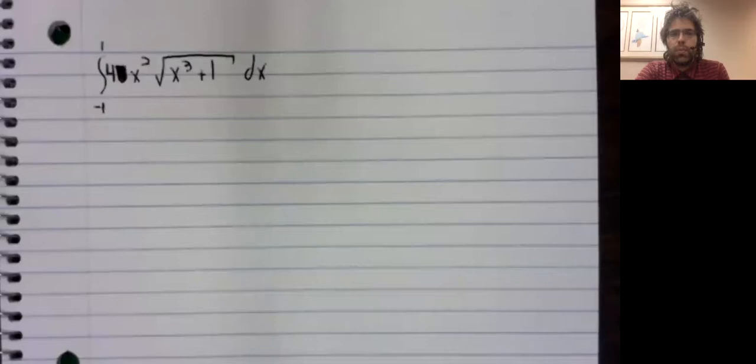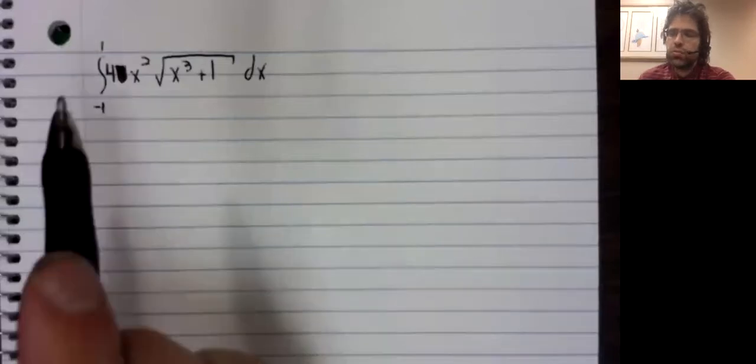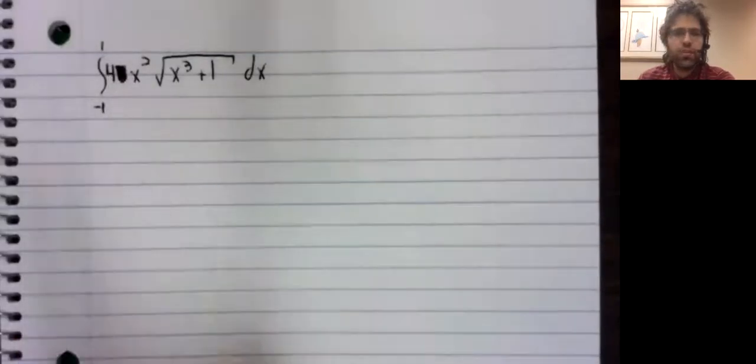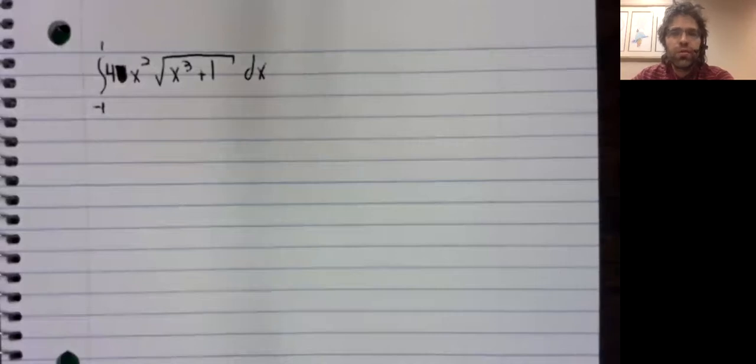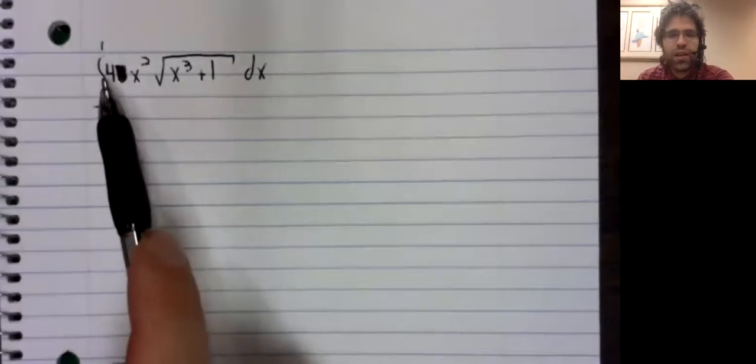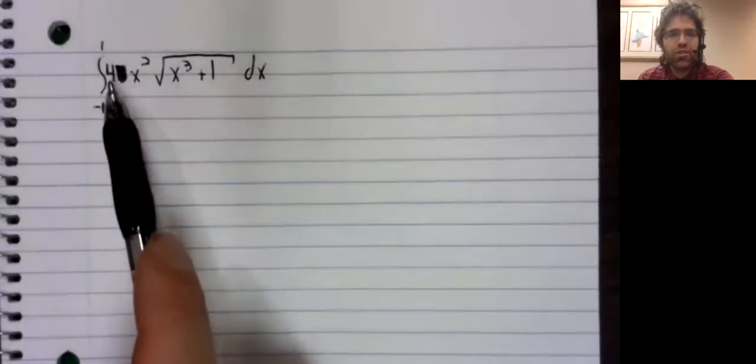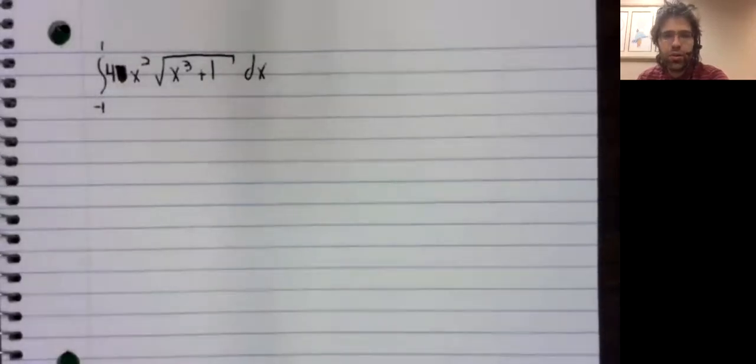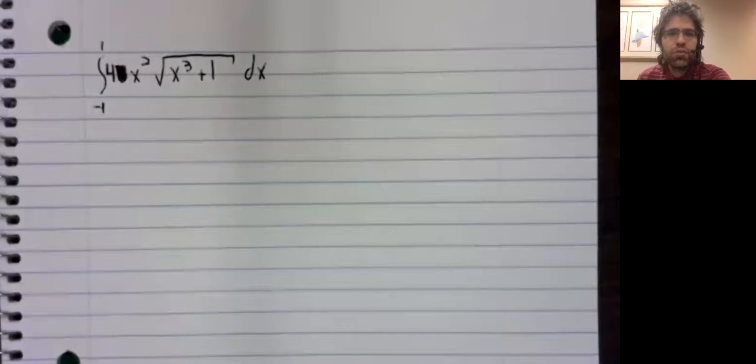Here's the problem we'll do twice. I edited it slightly from the notes. In the notes there was a 3x squared. That was a little too similar to the previous problem, so let's have a 4x squared here. Let's compute this definite integral.